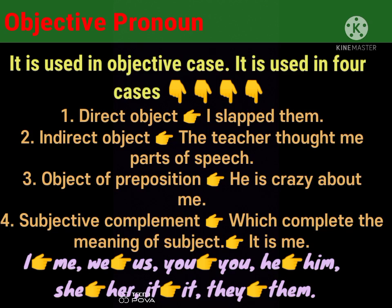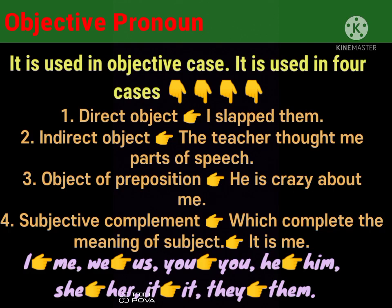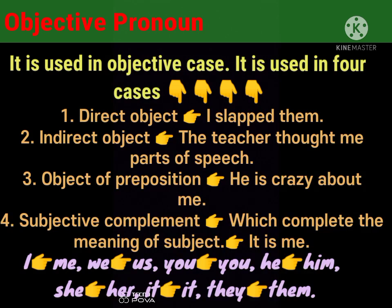Object of preposition. He is crazy about me. So here, 'about' is a preposition which is followed by an object — 'me'.